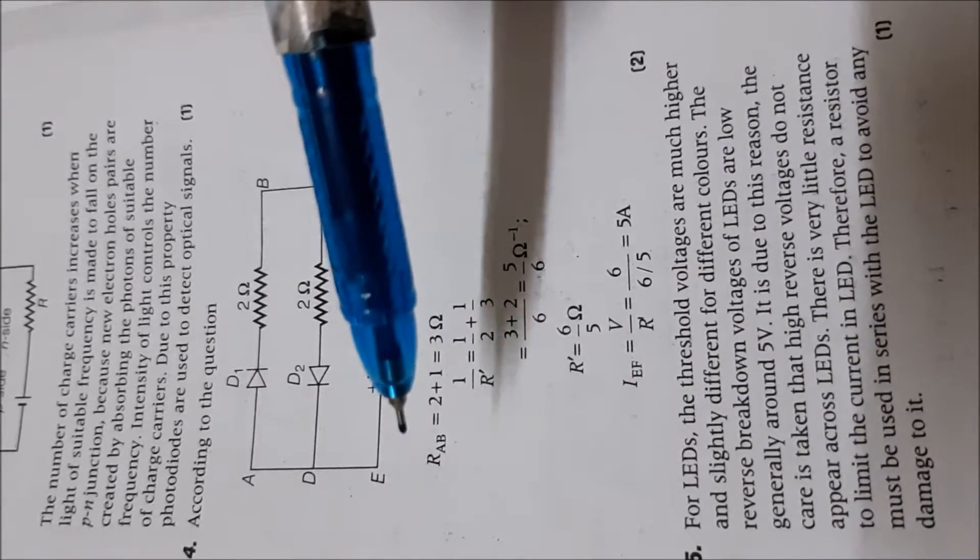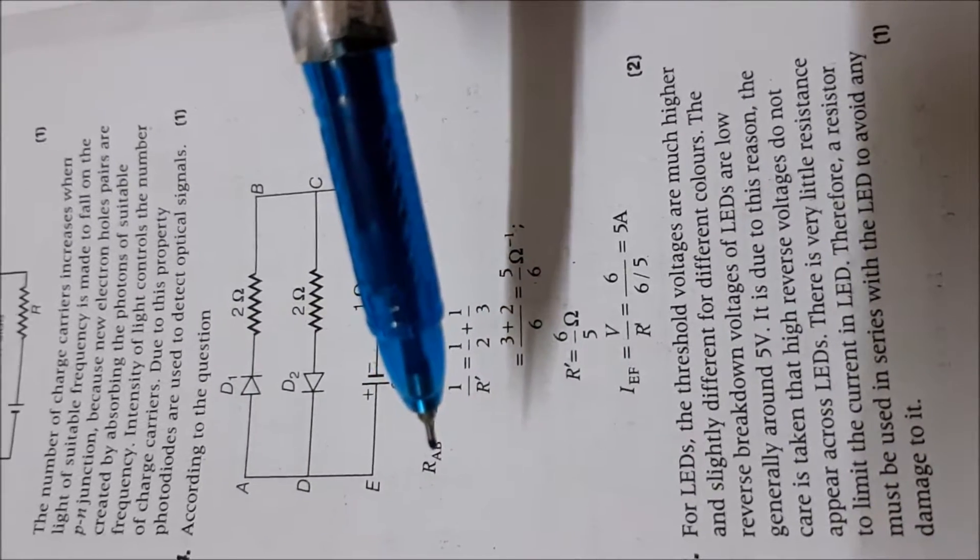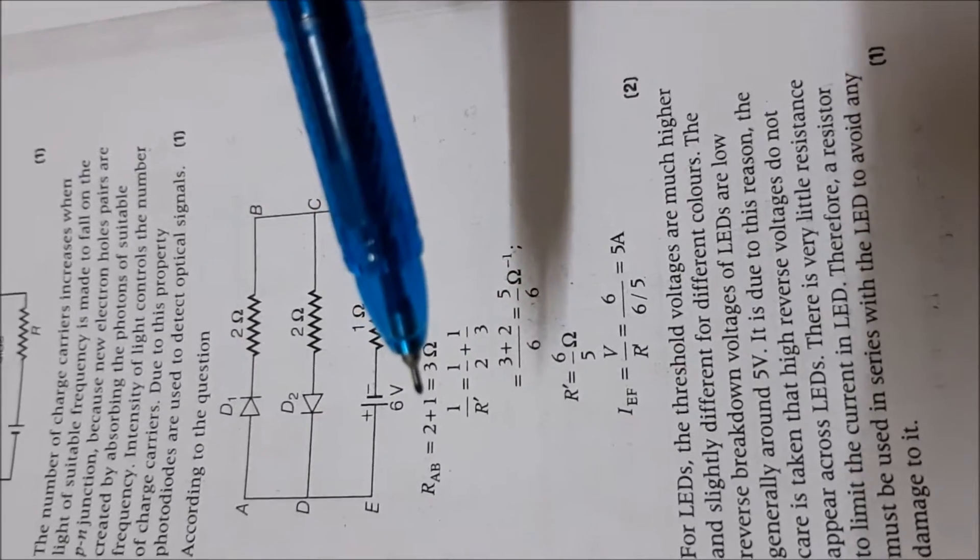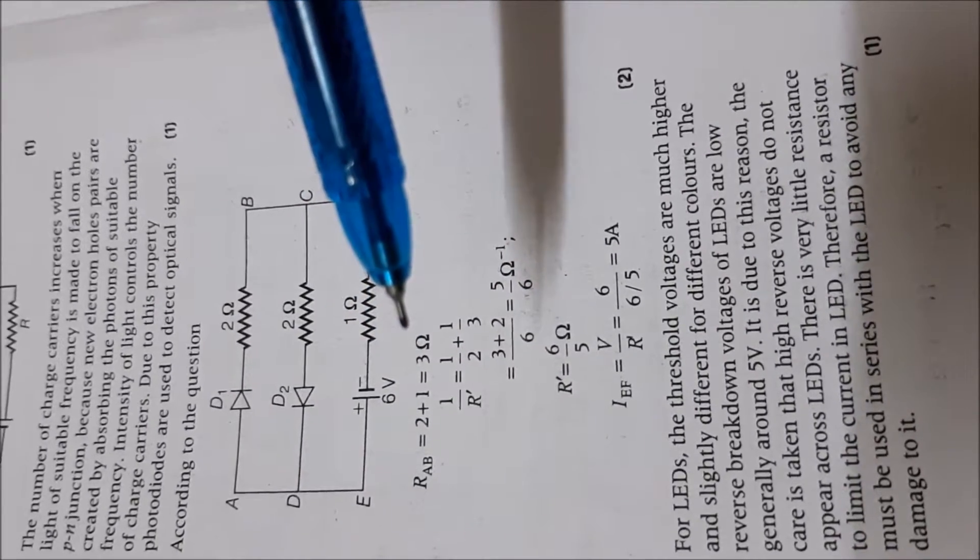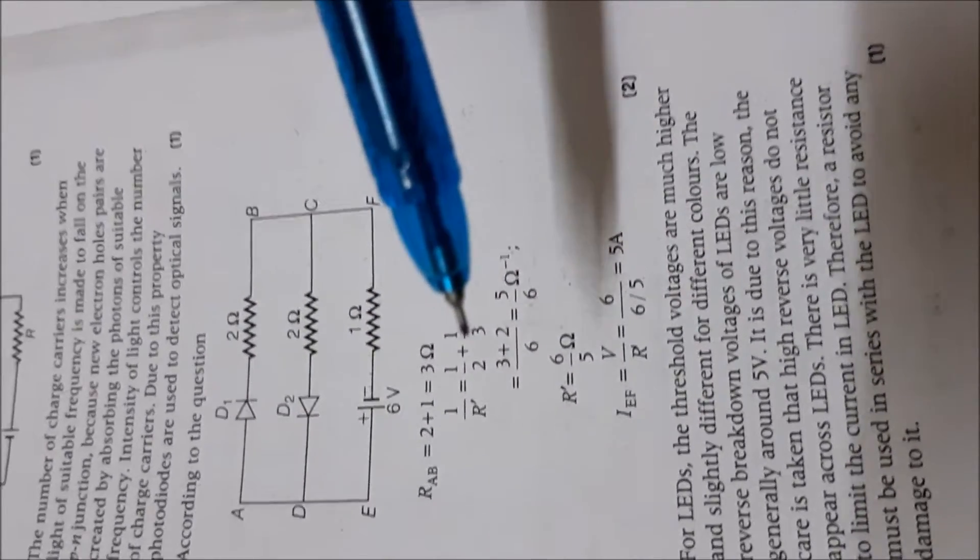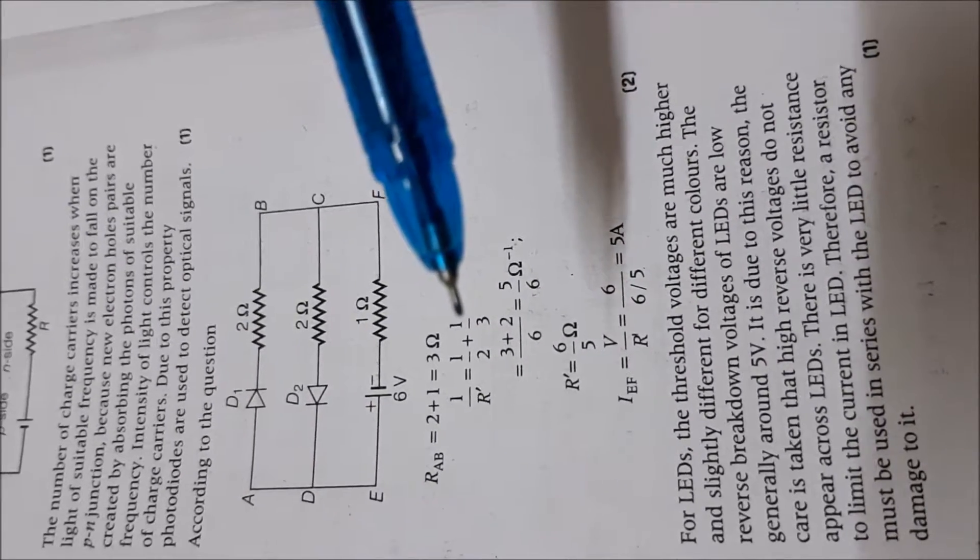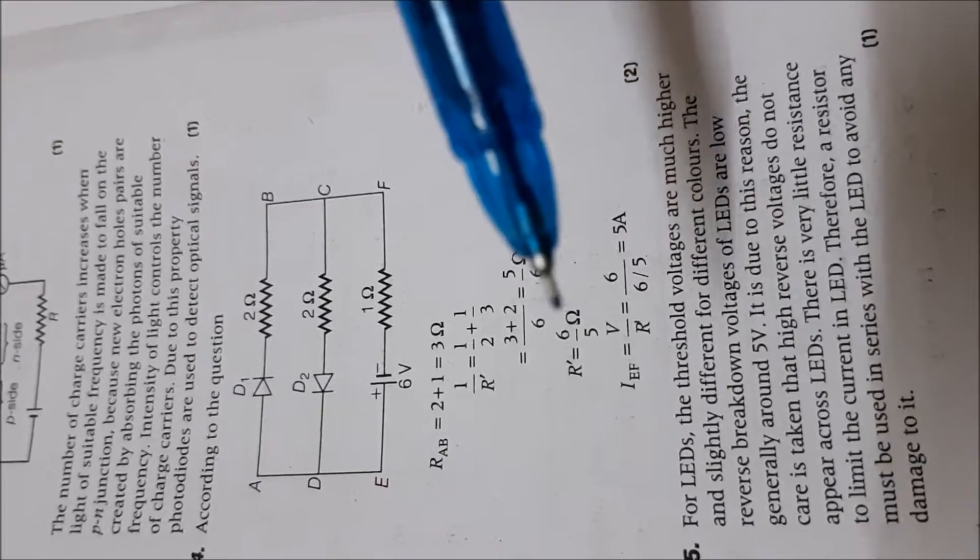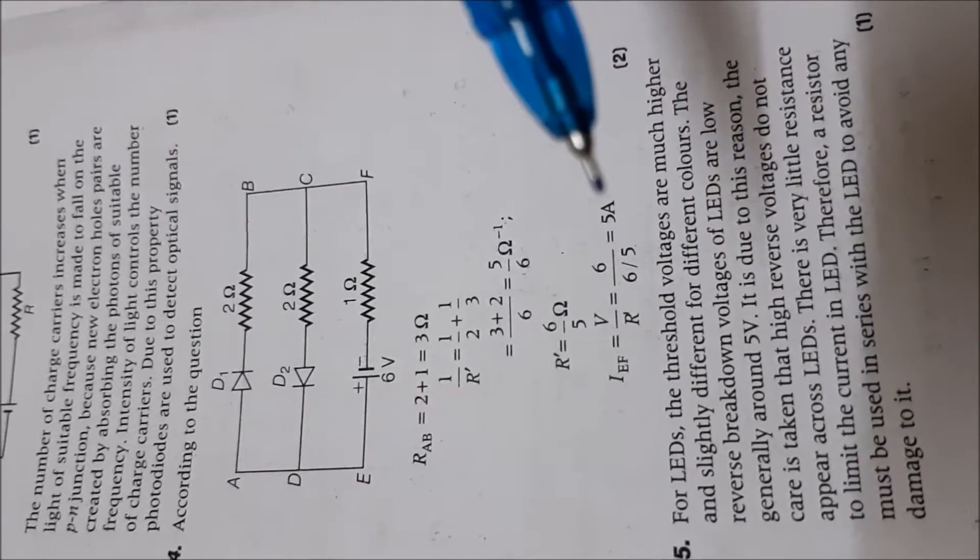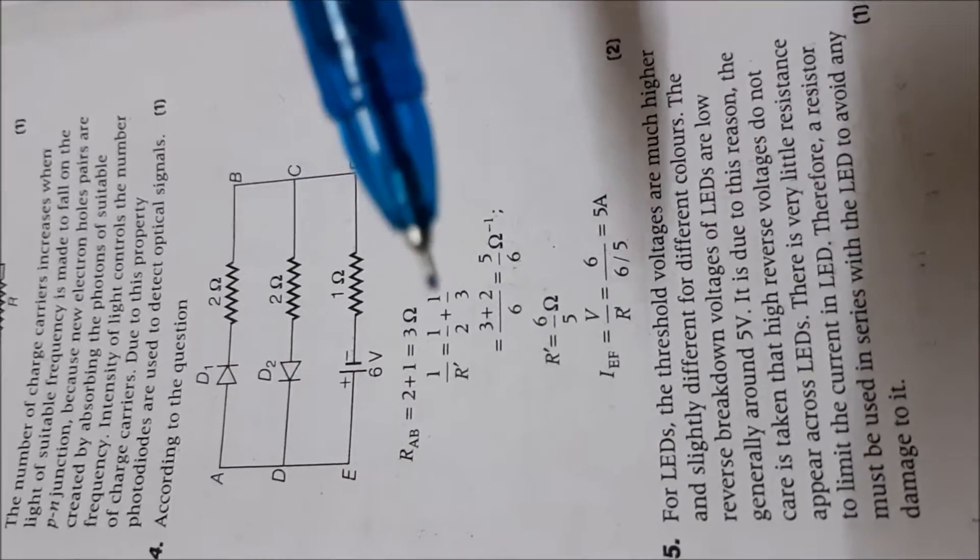This procedure is wrong. Here they have calculated the resistance between A and B to be 2 plus 1 as 3 ohms. Then they have calculated that 2 ohm and 3 ohm are in parallel. So this way they have proceeded to get the answer as 5A. But this answer is wrong. This procedure is wrong.